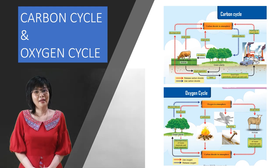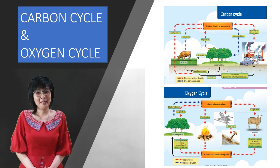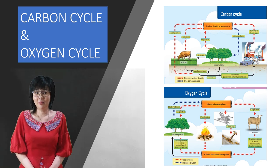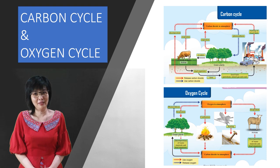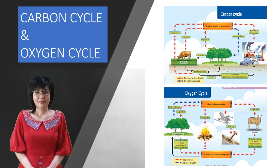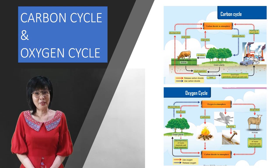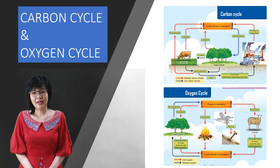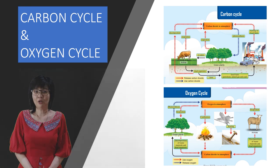The carbon cycle and oxygen cycle are important to maintain the content of carbon dioxide gas and oxygen gas in the air. Both processes are closely interconnected in maintaining the balance of air composition.